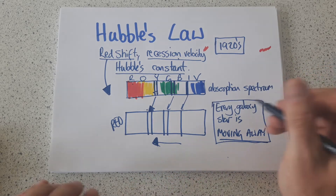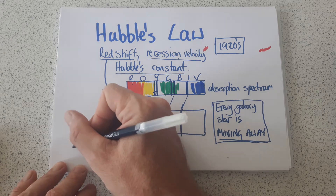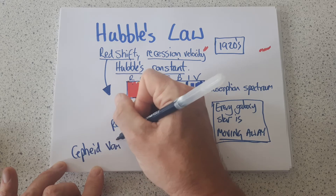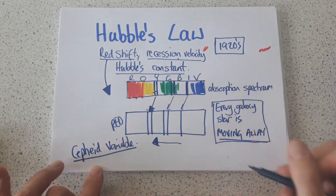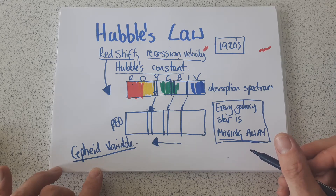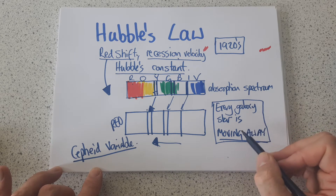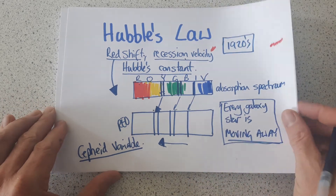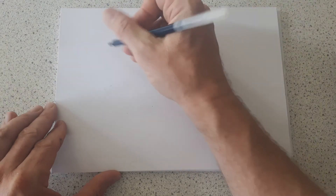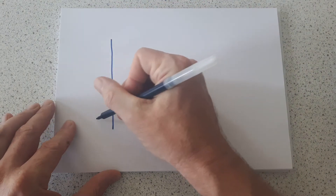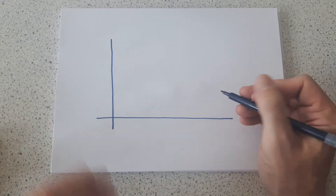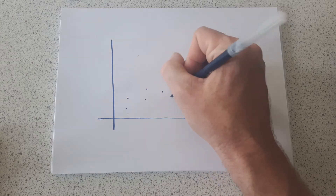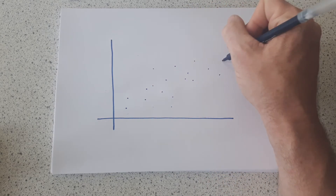On top of that, what he discovered was that using the Cepheid variable method to measure the distance to each galaxy — which was based on Henrietta Leavitt's ideas — he could actually plot the speed that it was moving away versus how far away it was. He used Henrietta Leavitt's Cepheid variable method to measure the distance to the galaxy, and then measured the speed the galaxy was moving away from us. His graph is quite a famous piece of data.